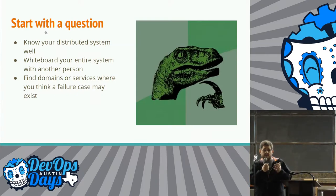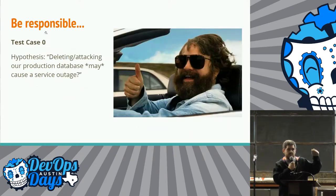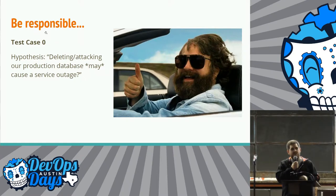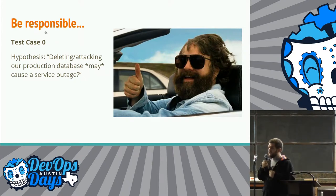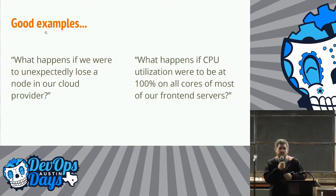The first thing you want to do is have a careful thought and know what your distributed system does. You might want to sit down with your team at a whiteboard and graph out your entire system, then ask: what can we do to attack it? Where might it fail? Be responsible — your first test case shouldn't be, let's try to delete our production database in RDS and see how our app behaves. Be smart about it.